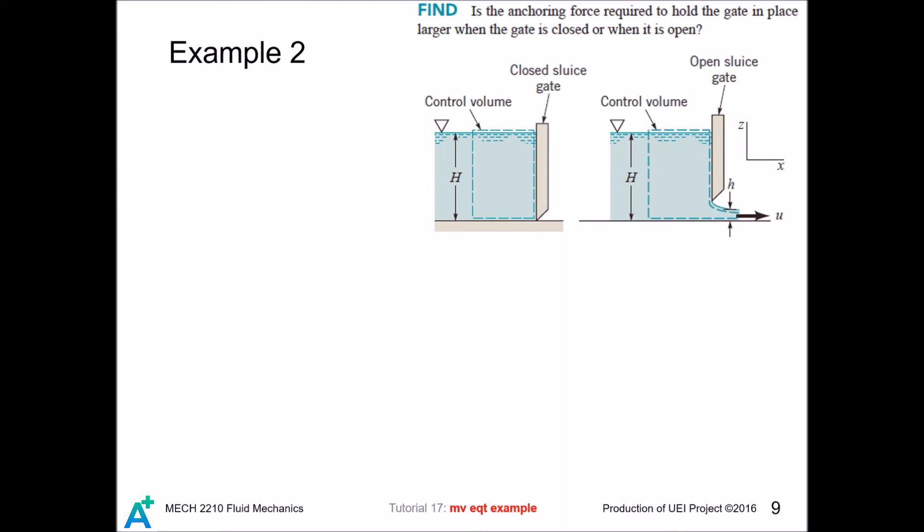We now work on another example that involves hydrostatic pressure. Let's draw a free-body diagram for the closed gate. There is a hydrostatic force and an anchoring force, and these two forces shall equal to each other. The gauge pressure here, halfway from the top, and the area of the gate is HB, where B is the width of the gate.